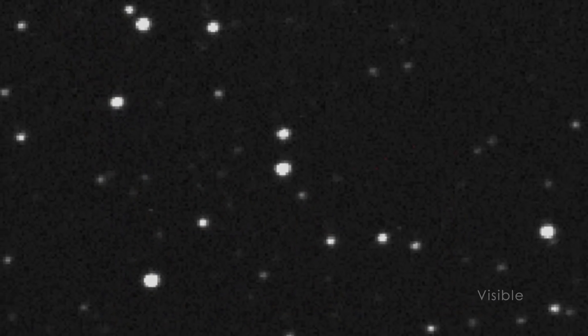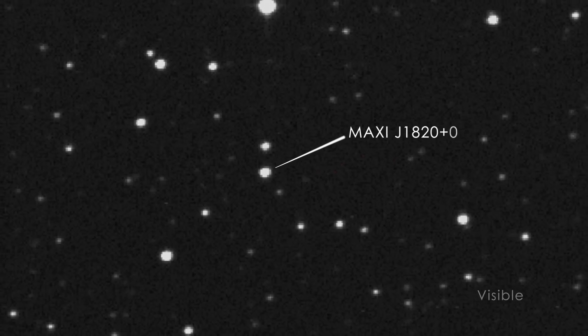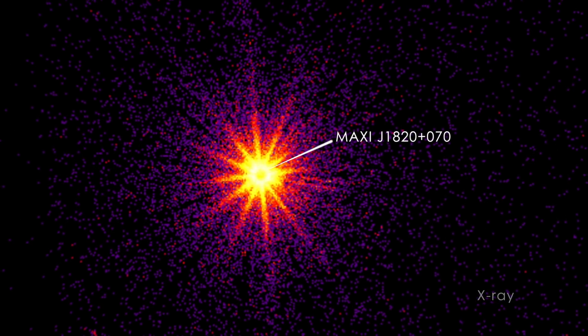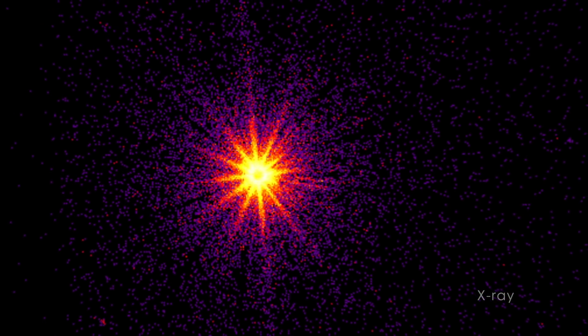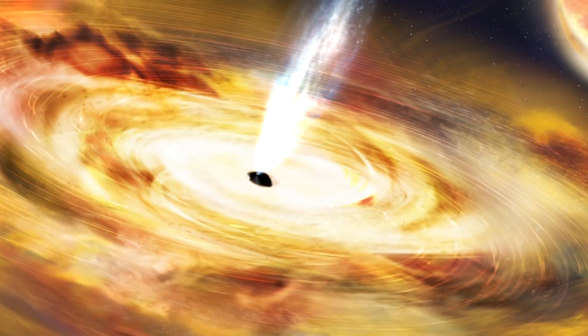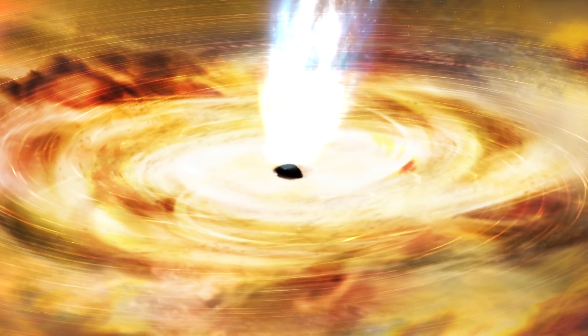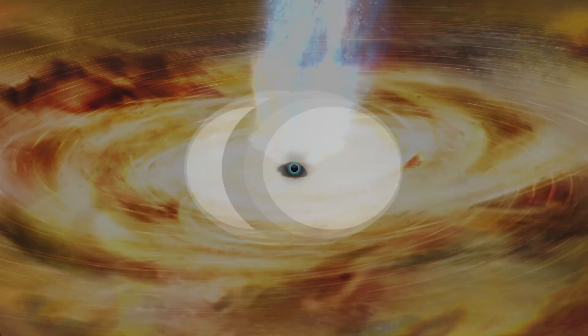NICER let us watch a flare of light from the area around a black hole called Maxi J1820 plus 070, or J1820 for short. This stellar mass black hole is around 10 times the sun's mass and funnels gas away from a neighboring star and into a dense ring of material called an accretion disk.